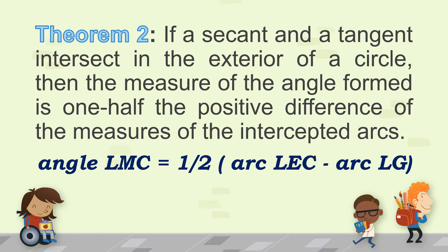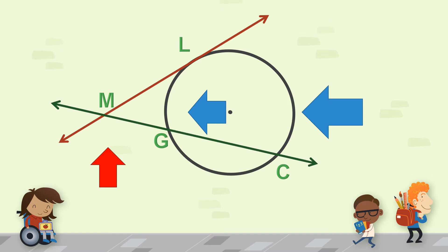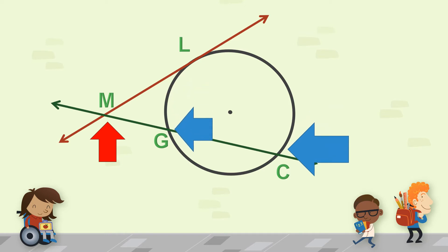Let's go to theorem number 2. If a secant and a tangent intersect in the exterior of a circle, then the measure of the angle formed is one-half the positive difference of the measures of the intercepted arcs. To illustrate, angle LMC is equal to one-half times arc LEC minus arc LG. So we have tangent line ML and secant line MC; these two lines form two arcs on our circle — arc LC and arc LG. According to the theorem, you subtract the bigger arc minus the smaller arc and then divide by two to get the measure of angle LMC.